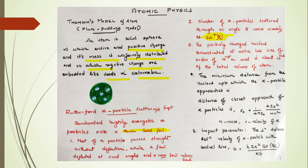This is a very important concept. The positively charged nucleus concentrated at the center has a size of order of 10 to the minus 5 meters and is about 10 to the minus 12 of the total volume of the atom. The minimum distance from the nucleus up to which the alpha particle approaches is called the distance of closest approach of the alpha particle. We can write the relation as R0 equals 1 by 4π epsilon 0, 4Z square, division by EM to V square.